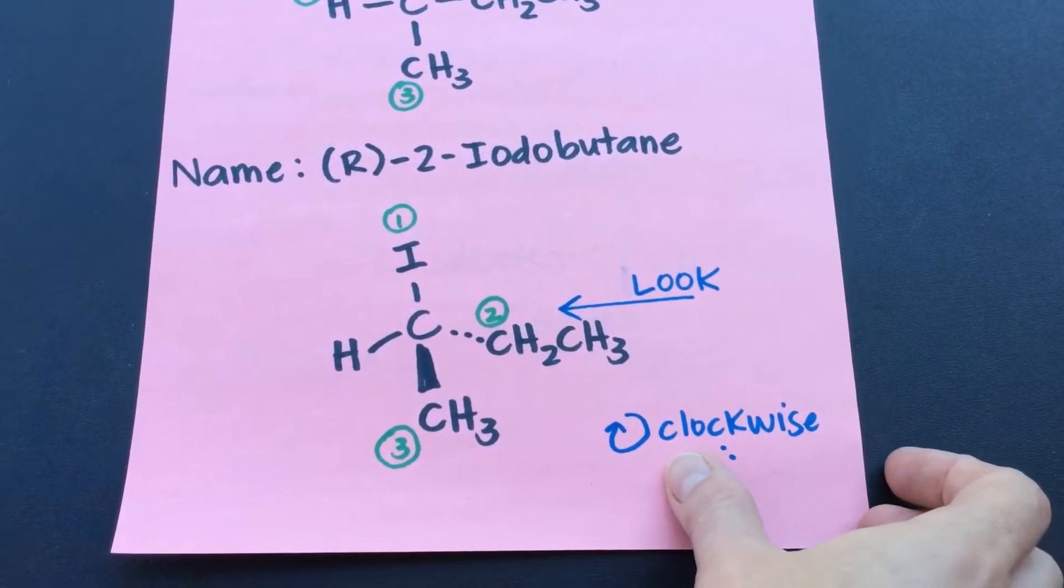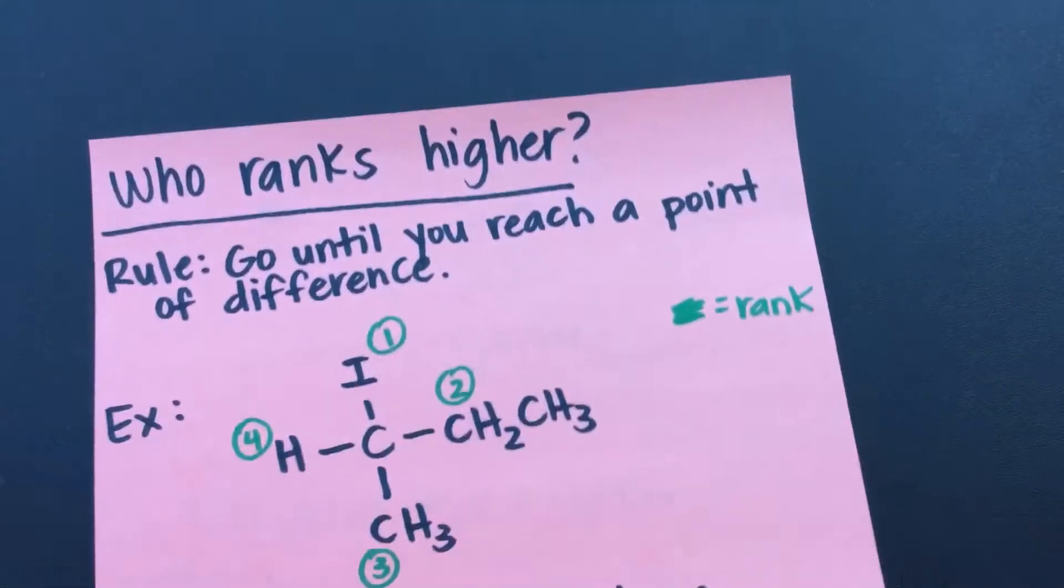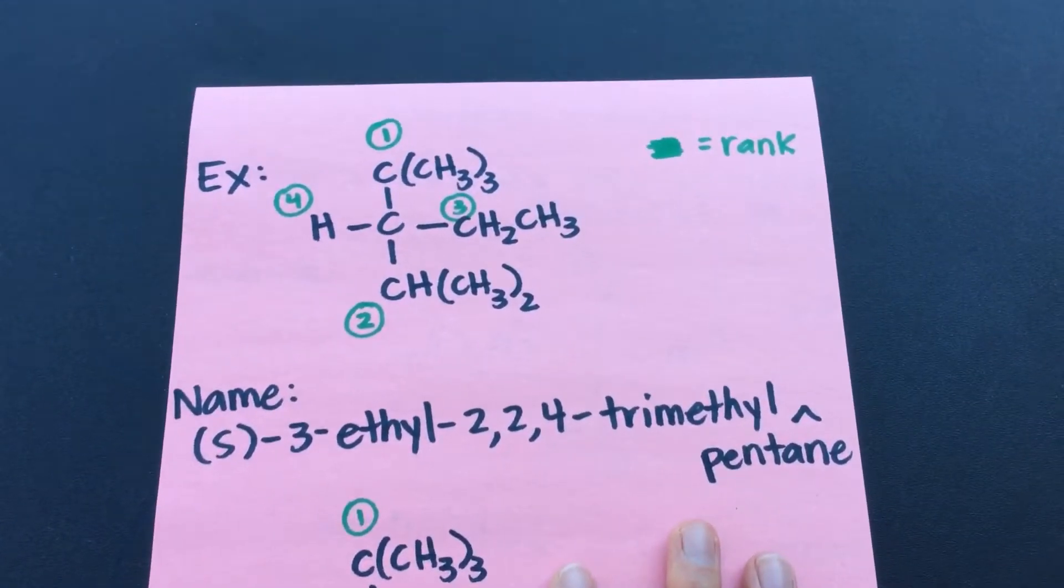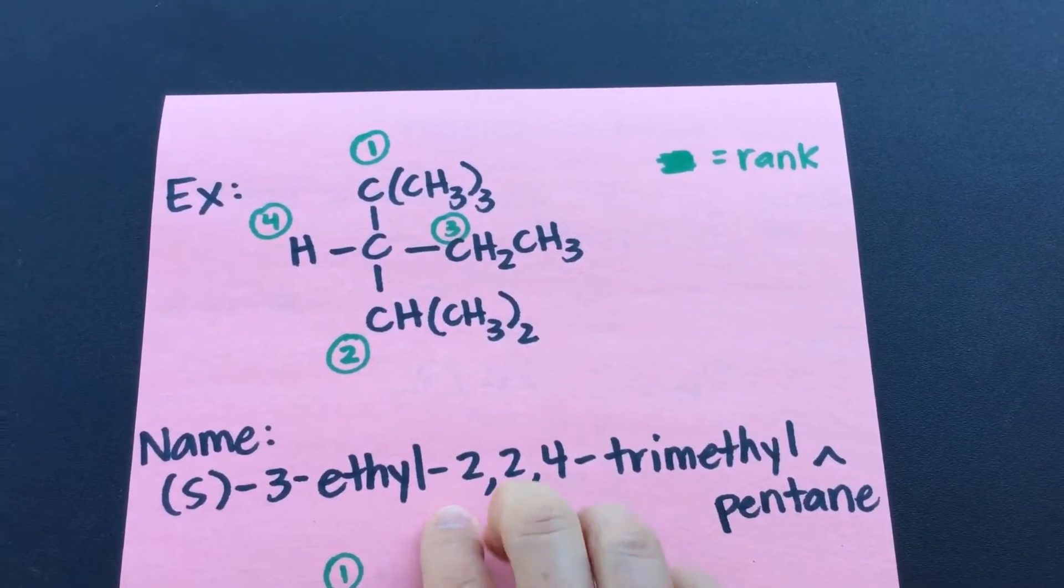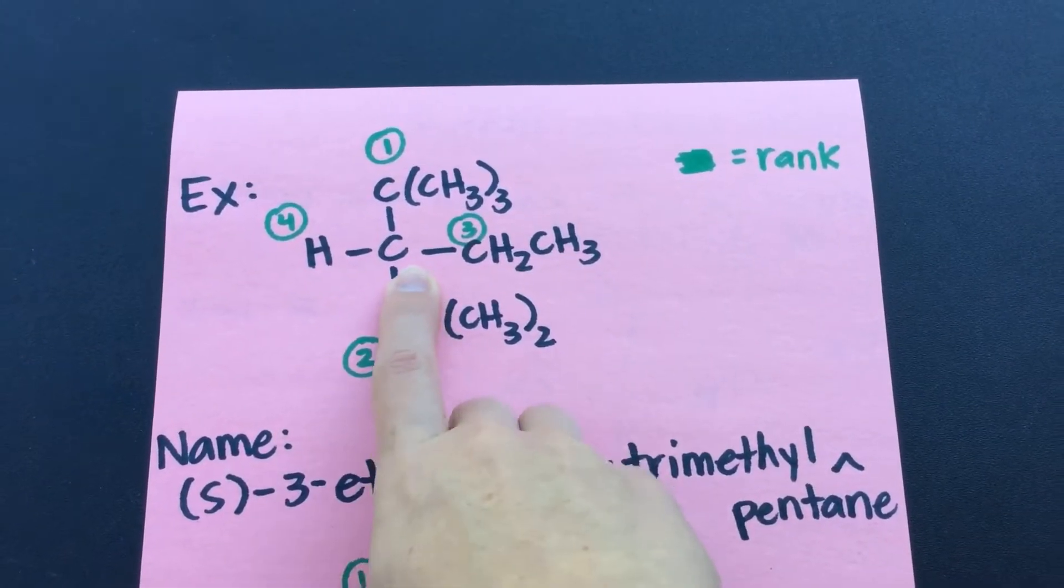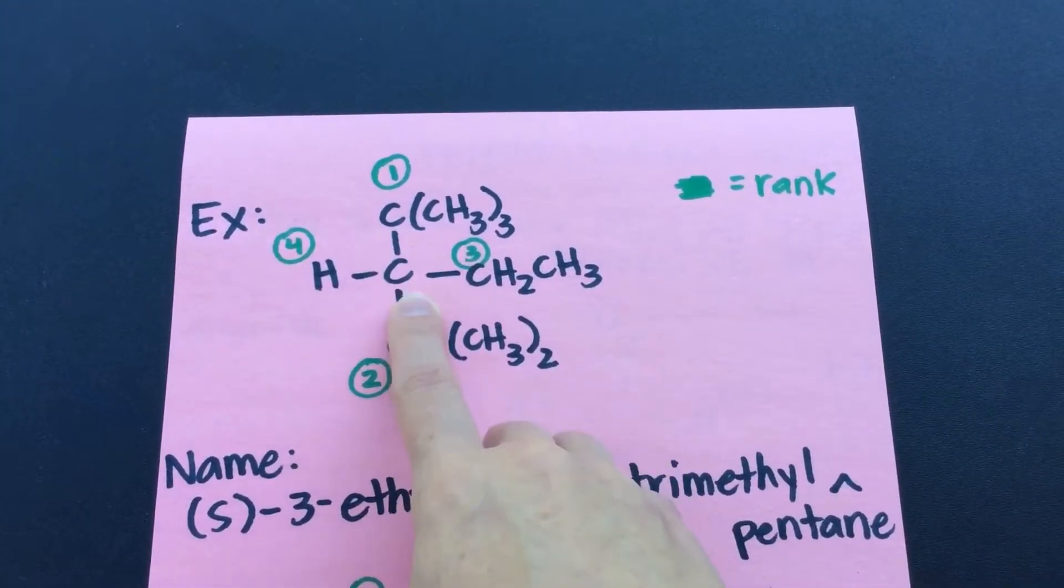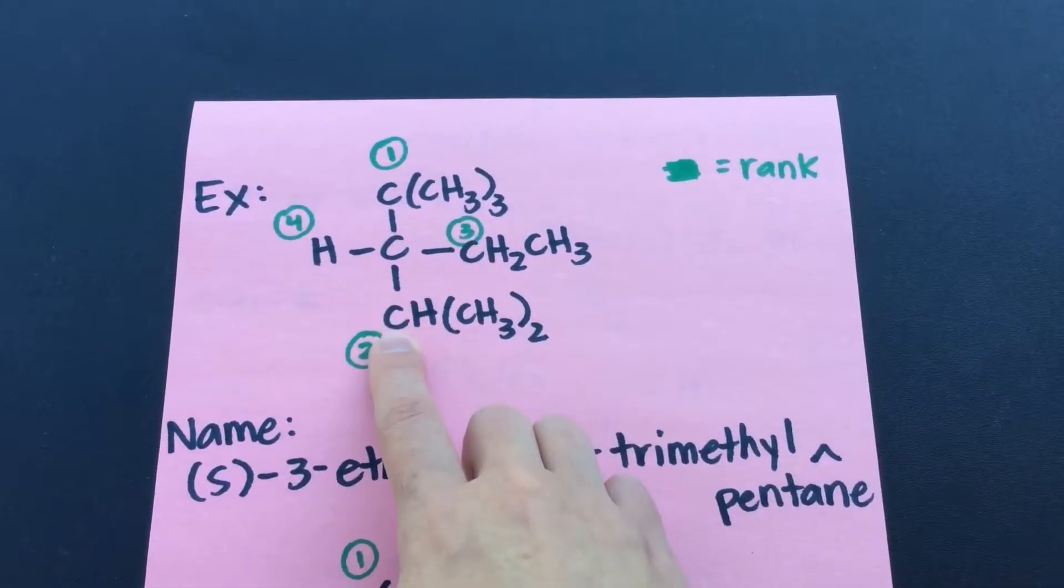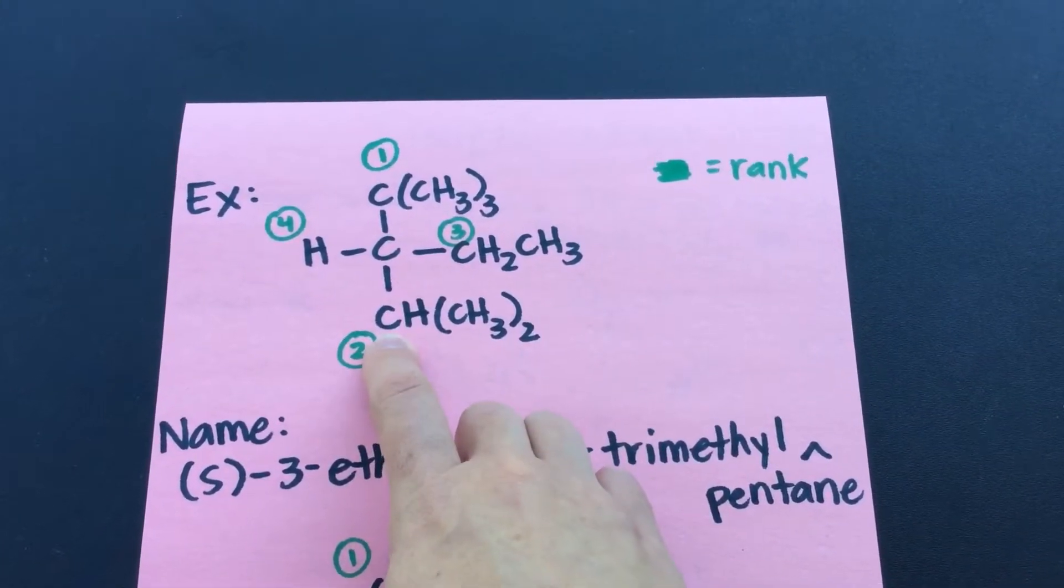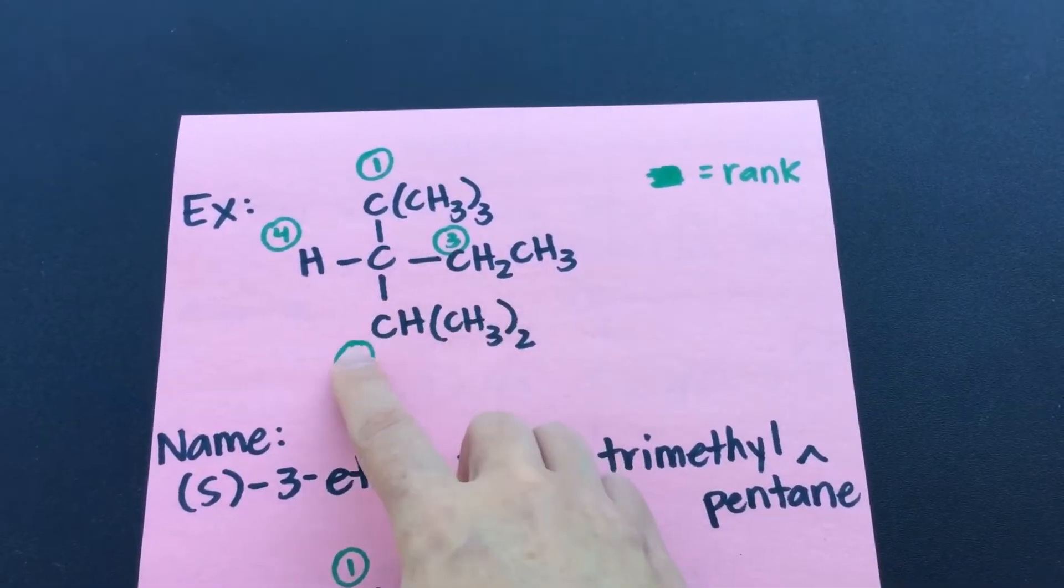Let's do another example. Let's choose a more complicated example here. All right. So we've got our stereocenter here. We've got a carbon attached directly, that carbon's attached directly, and that carbon's attached directly. So again, we have to go until we reach a point of difference.